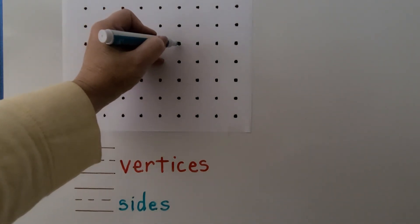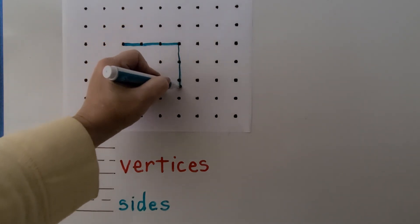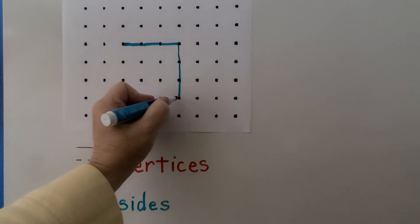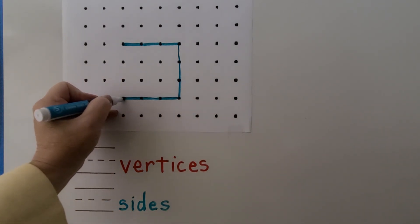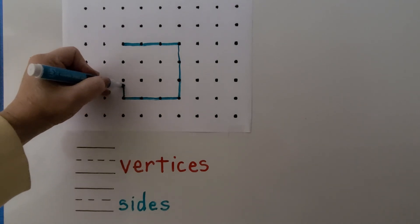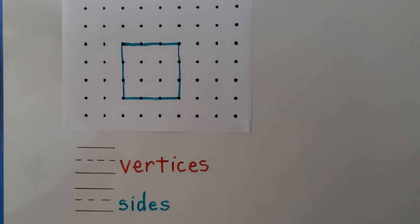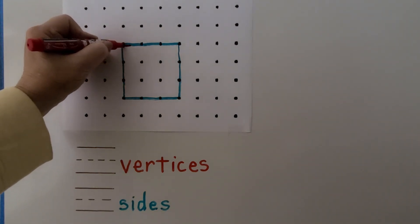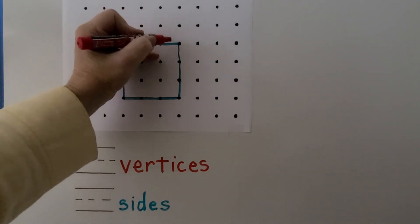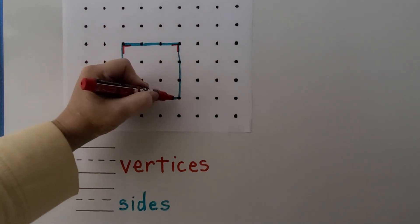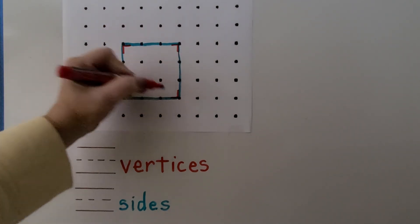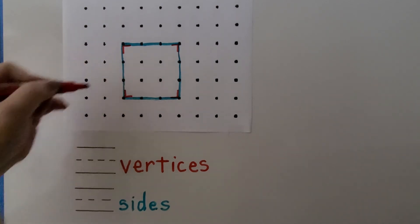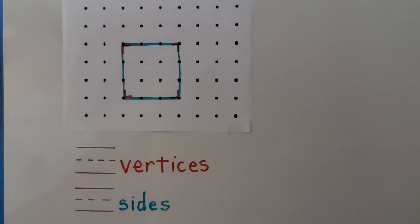So we have this first line. We go one space, two spaces, three spaces, then draw this line — one, two, three spaces. Then we go up — one, two, three spaces. Then we draw the final line between our vertices. Where the ends of lines meet, we create a vertex. We have a vertex here, a vertex here, a vertex here, and they're square vertices. We draw four lines of equal length for the sides of a square.